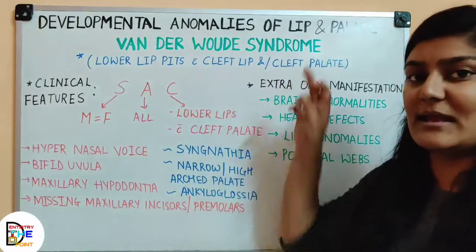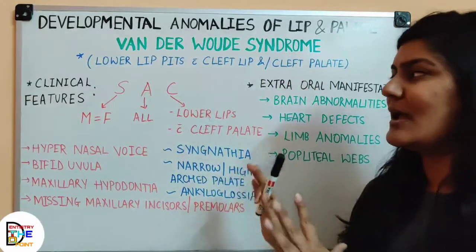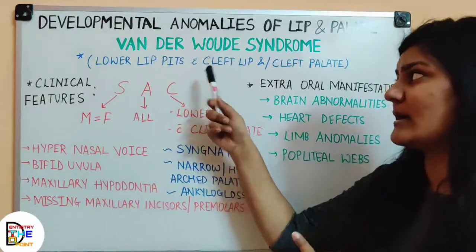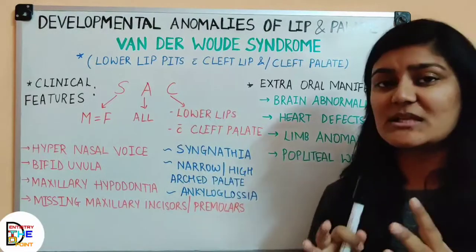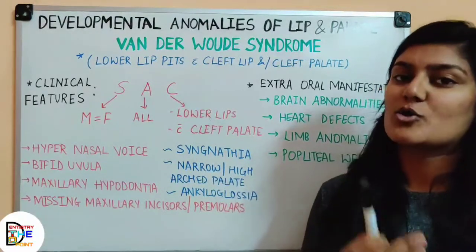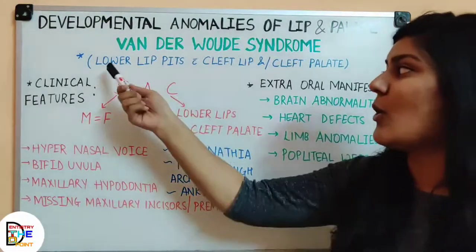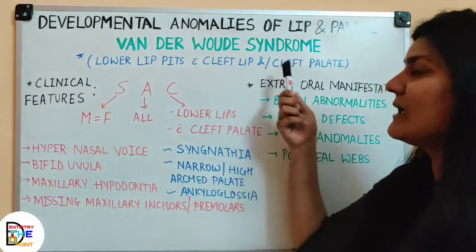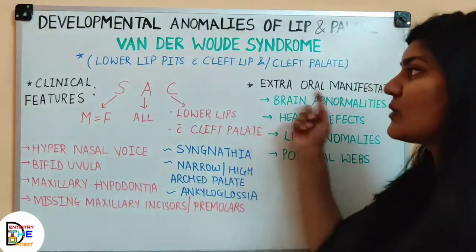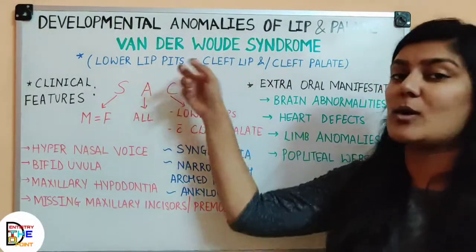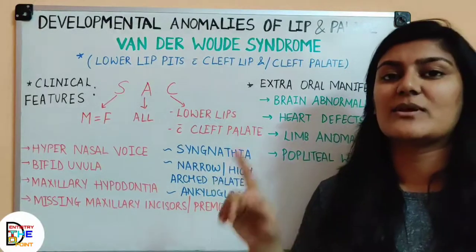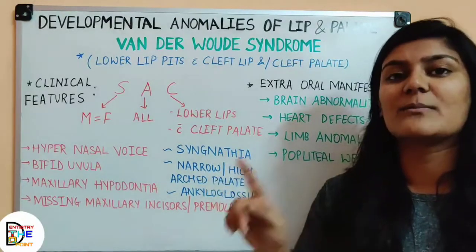The hallmark of Van der Woude syndrome is the combination of lower lip pits with cleft lip and/or cleft palate — meaning it can be either a cleft lip, a cleft palate, or both. This is the hallmark line you need to remember. There are additional features, but this hallmark combination is the key point to know.